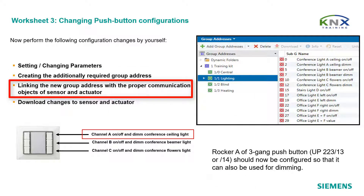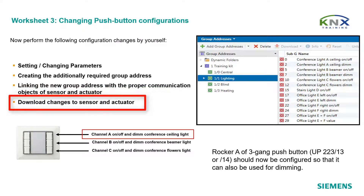You must link both required group addresses now to the changed channel A. Finally, download and test sensor and actuator.